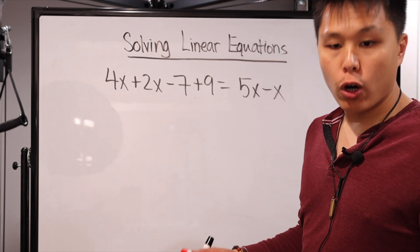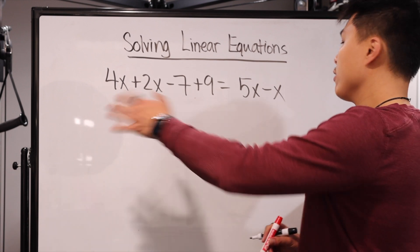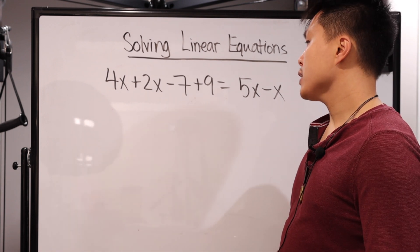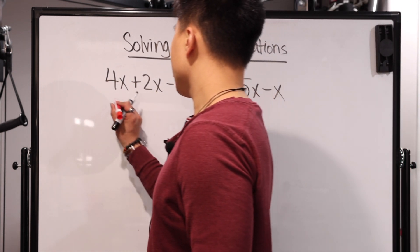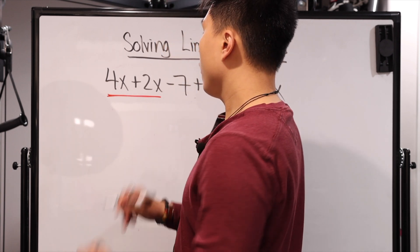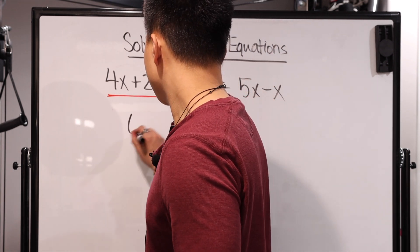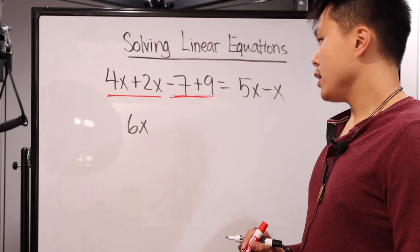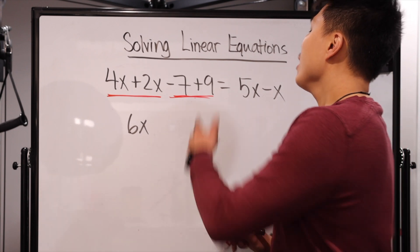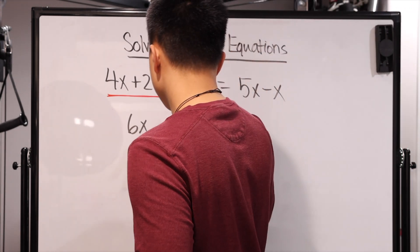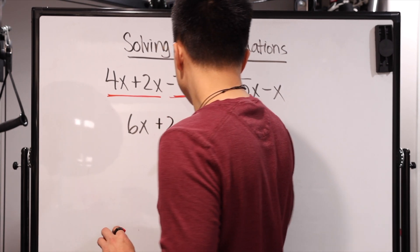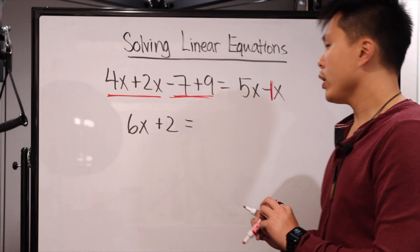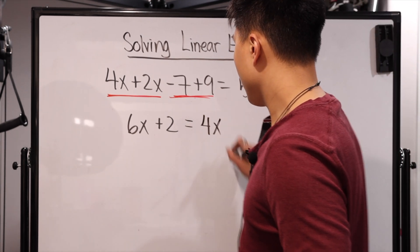Let's look at one more just to cover our bases. This one looks very scary because you have x's on both sides of the equation, but we're just following simple steps. We're simplifying both sides. On the left side, we can combine like terms: 4x plus 2x is just 6x. We can also combine the constants: negative 7 plus 9 is just 2. So we have 6x plus 2. On the right side, there's an invisible 1 in front of the x, so it's 5x minus 1x, which results in 4x.